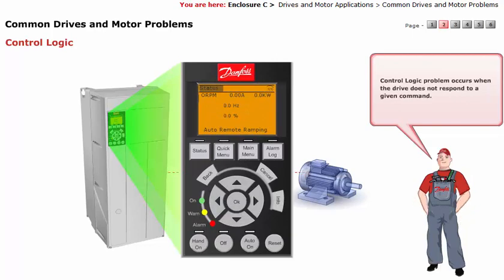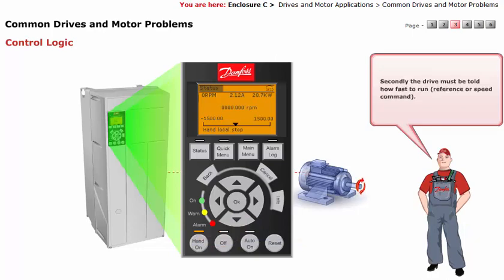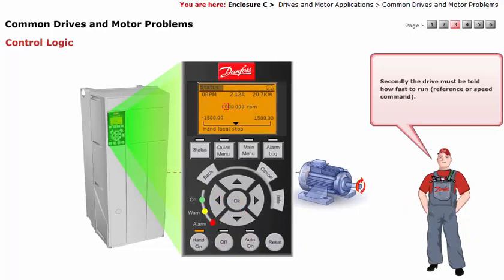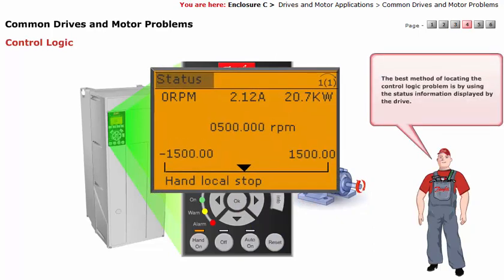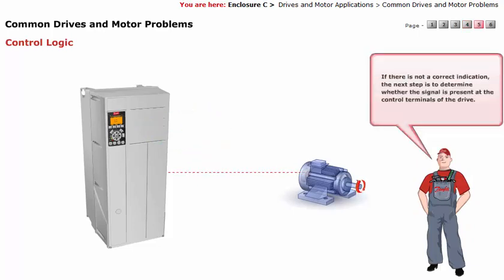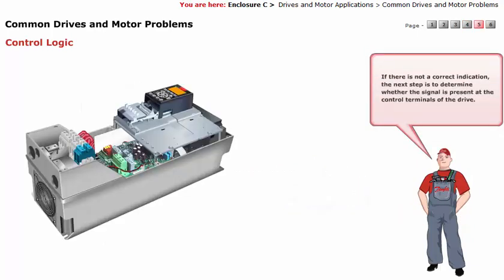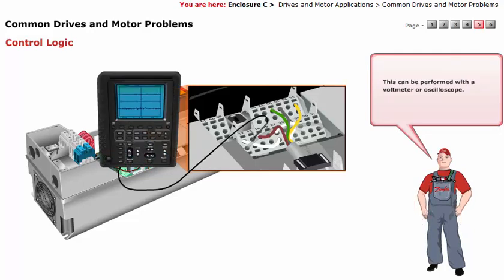Control logic problems occur when the drive does not respond to a given command. There are two basic commands that must be given to any drive in order to obtain an output: first, the drive must be told to run; secondly, the drive must be told how fast to run. The drives are designed to accept a variety of signals. The best method of locating the control logic problem is by using the status information displayed by the drive.